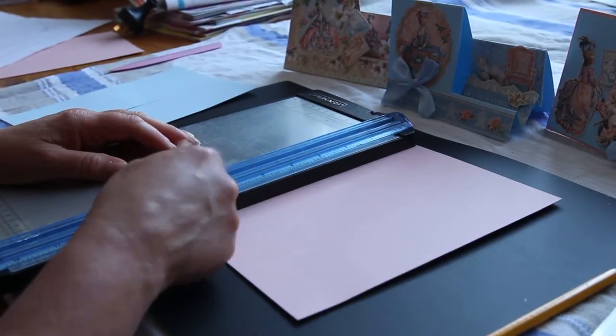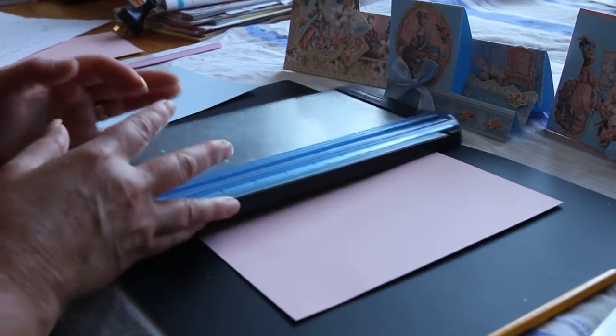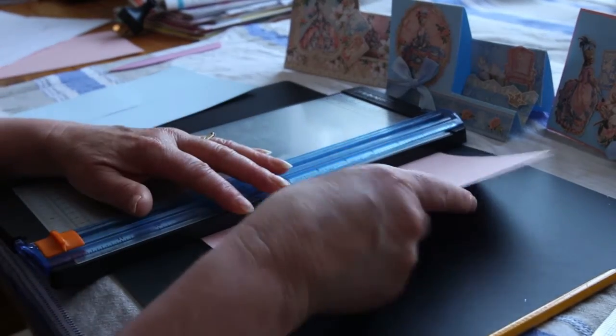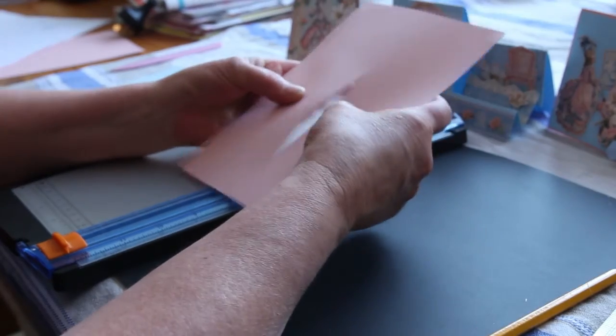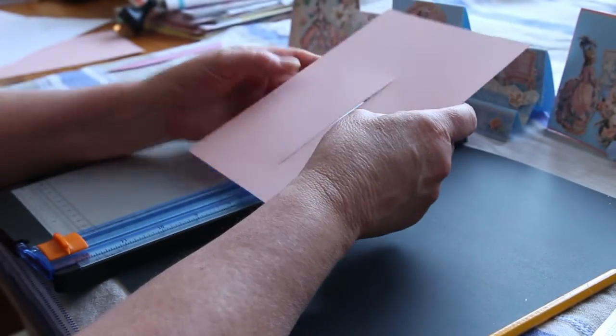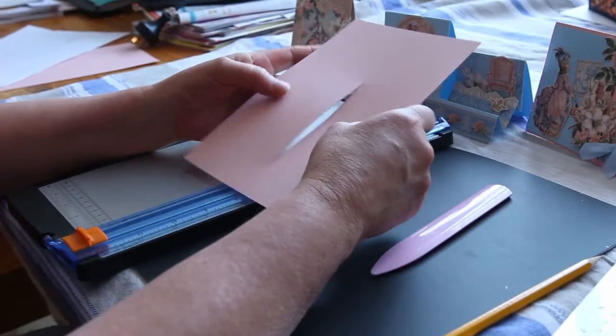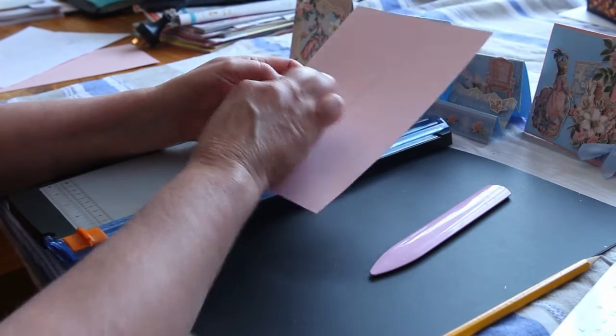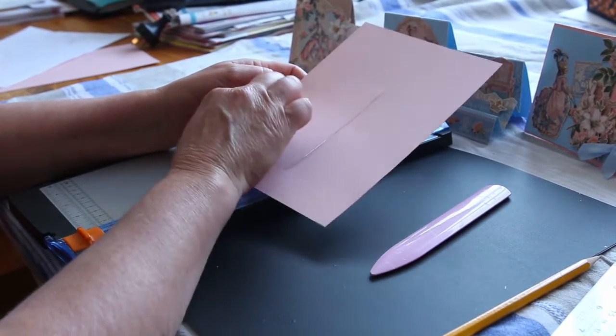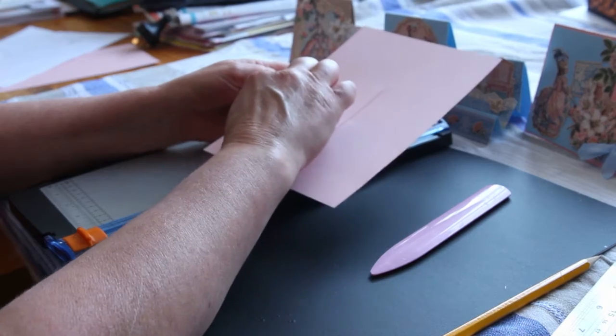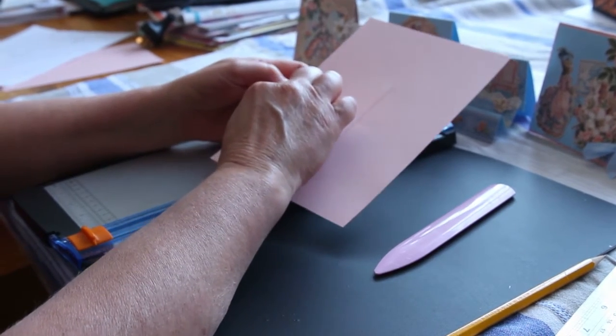So the next step is just to do all the folds. The first fold we'll do on the eight centimeter side, and that will be 10 centimeters—10 and a half, actually—10 and a half centimeters up.